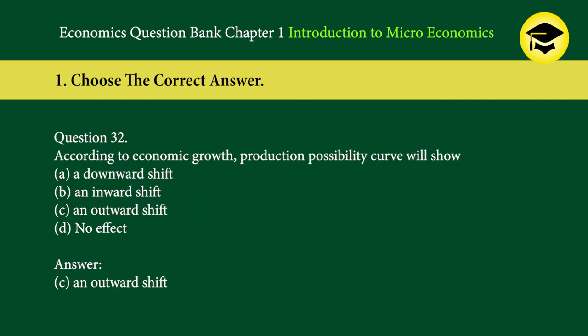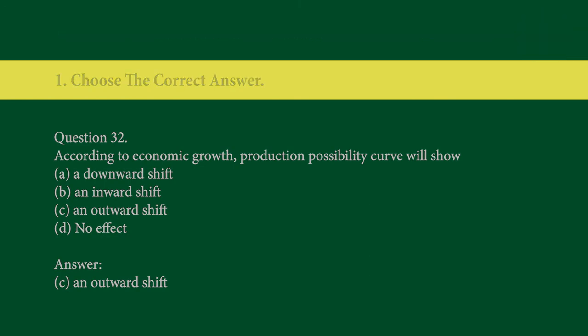Question 32: According to economic growth, the production possibility curve will show — A. a downward shift, B. an inward shift, C. an outward shift, D. no effect. Answer: C. An outward shift.